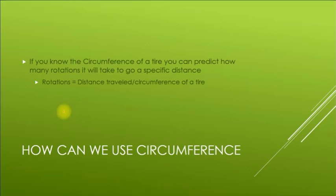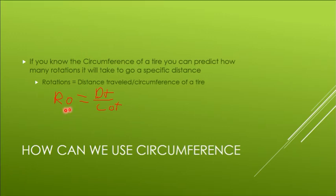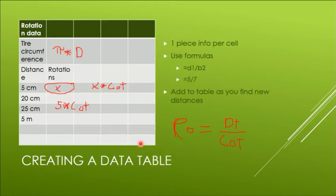So the formula would look something like the next line here where you would have rotations - I denote that RO - equals the distance you want to travel divided by what I call the COT, the circumference of the tire. You divide the distance you want to go - let's say you want to go five centimeters and you have a five centimeter tire - you would then get one rotation. That's another way of writing that formula there.